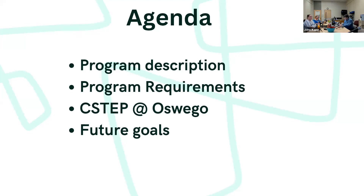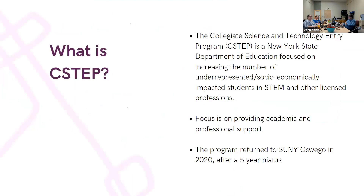My plan is to make sure as many people can get this information as possible so they can share it with students who are really going to benefit. So: program description, program requirements, what we've been doing over the past three years, and our vision for the rest of our grant cycle and hopefully a renewal for another five years. So what is CSTEP? CSTEP is the Collegiate Science and Technology Entry program. It's a New York State Department of Education grant program focused on increasing the number of underrepresented and socioeconomically impacted students in STEM and other licensed professions.